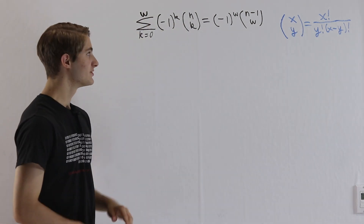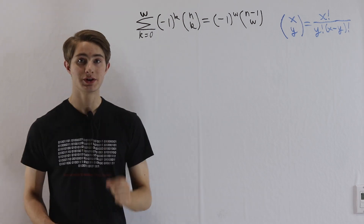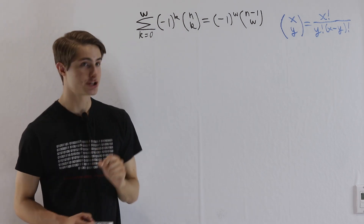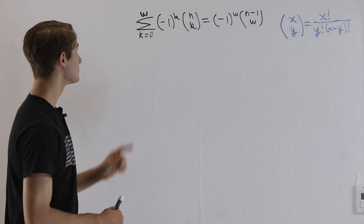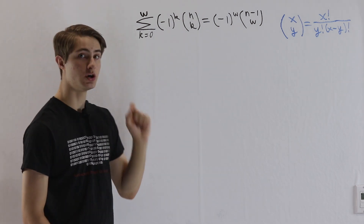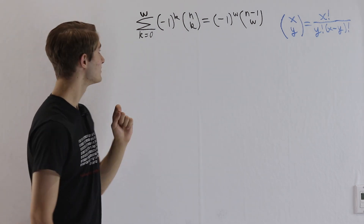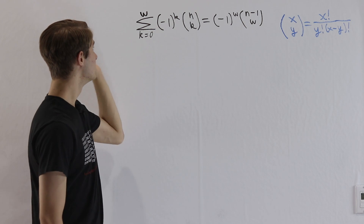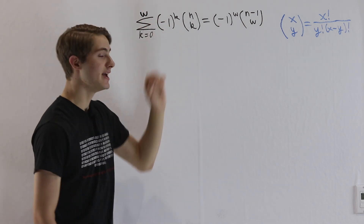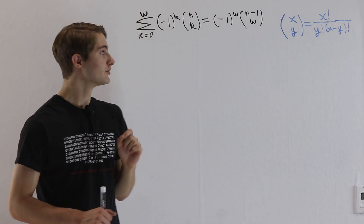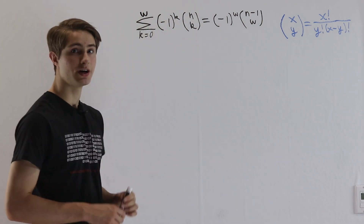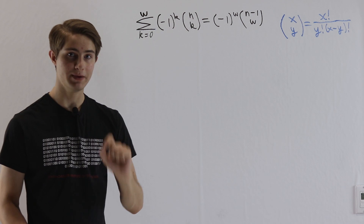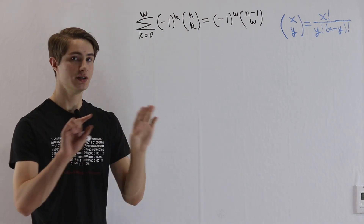In order to prove this identity, we're going to use induction because we want to prove this for all positive integers w and n. So we're going to start off by proving a base case.